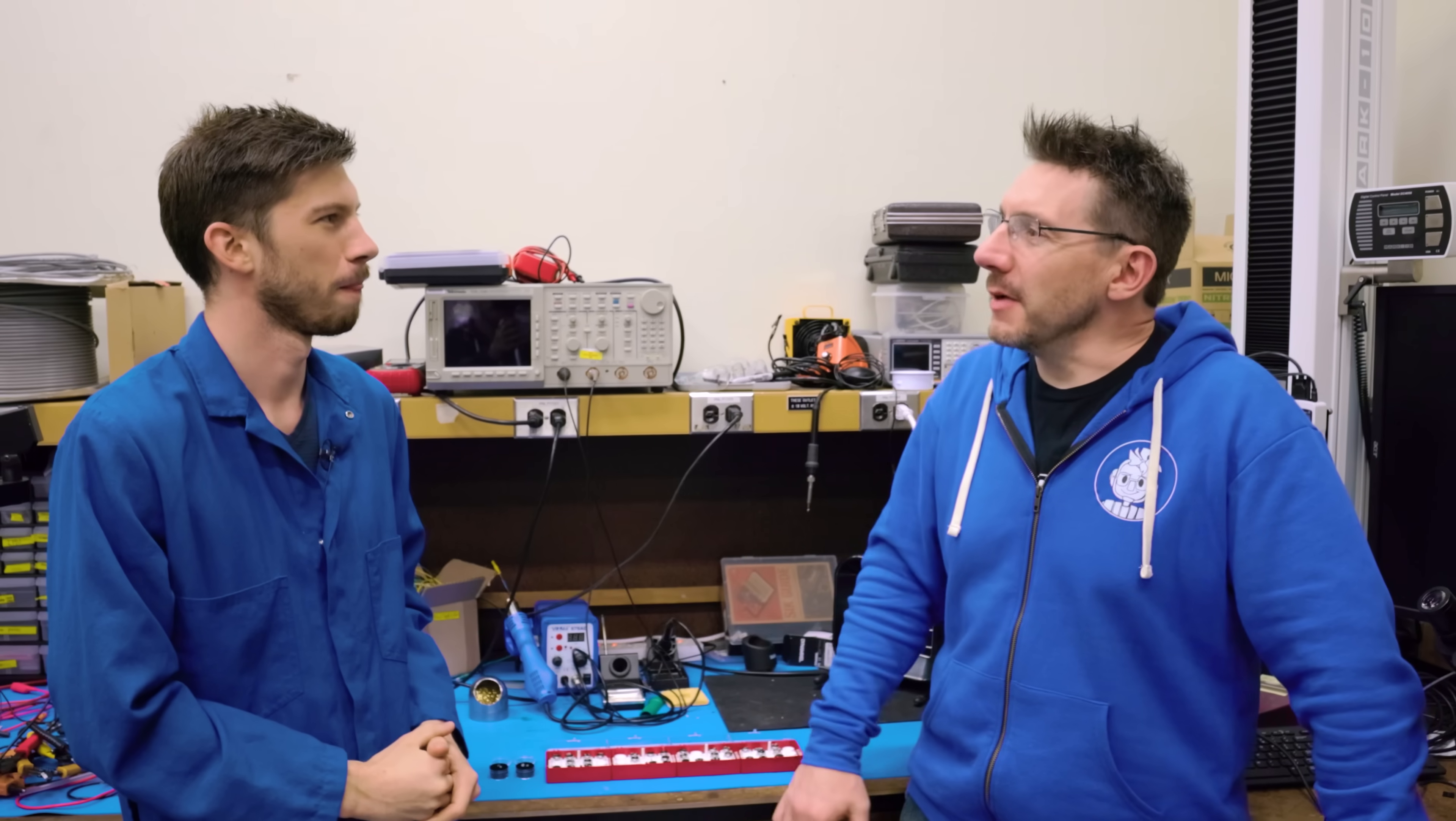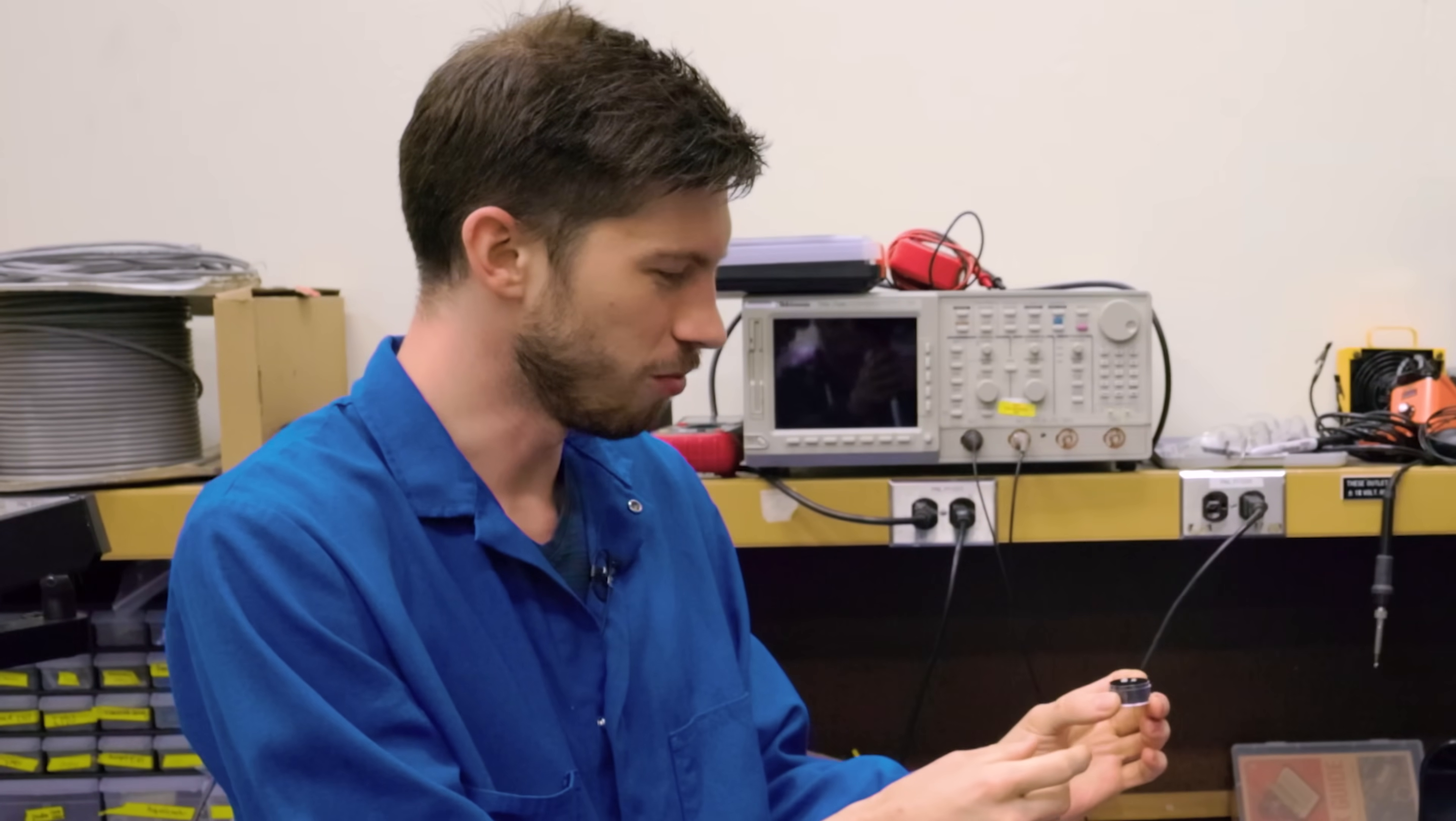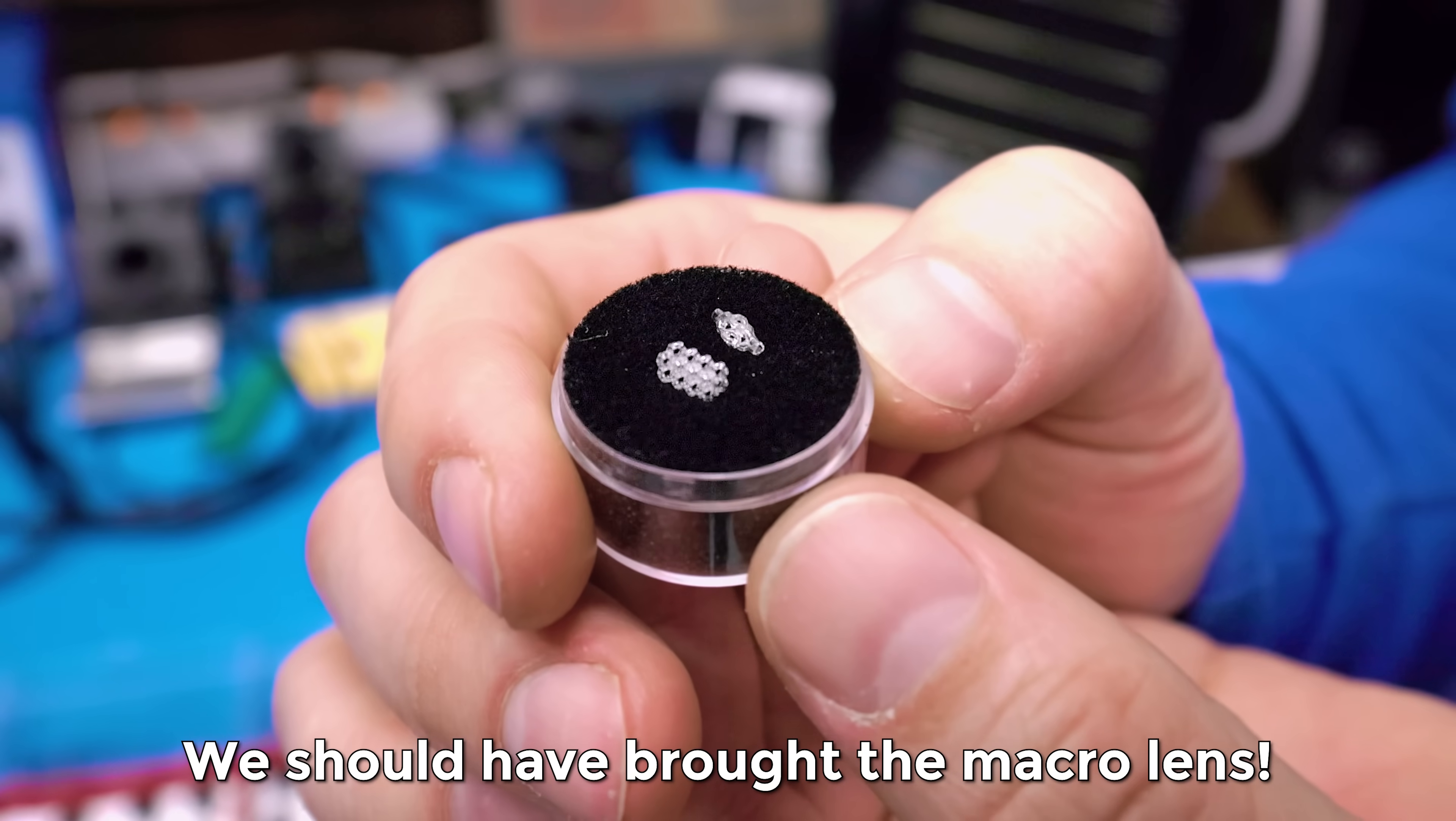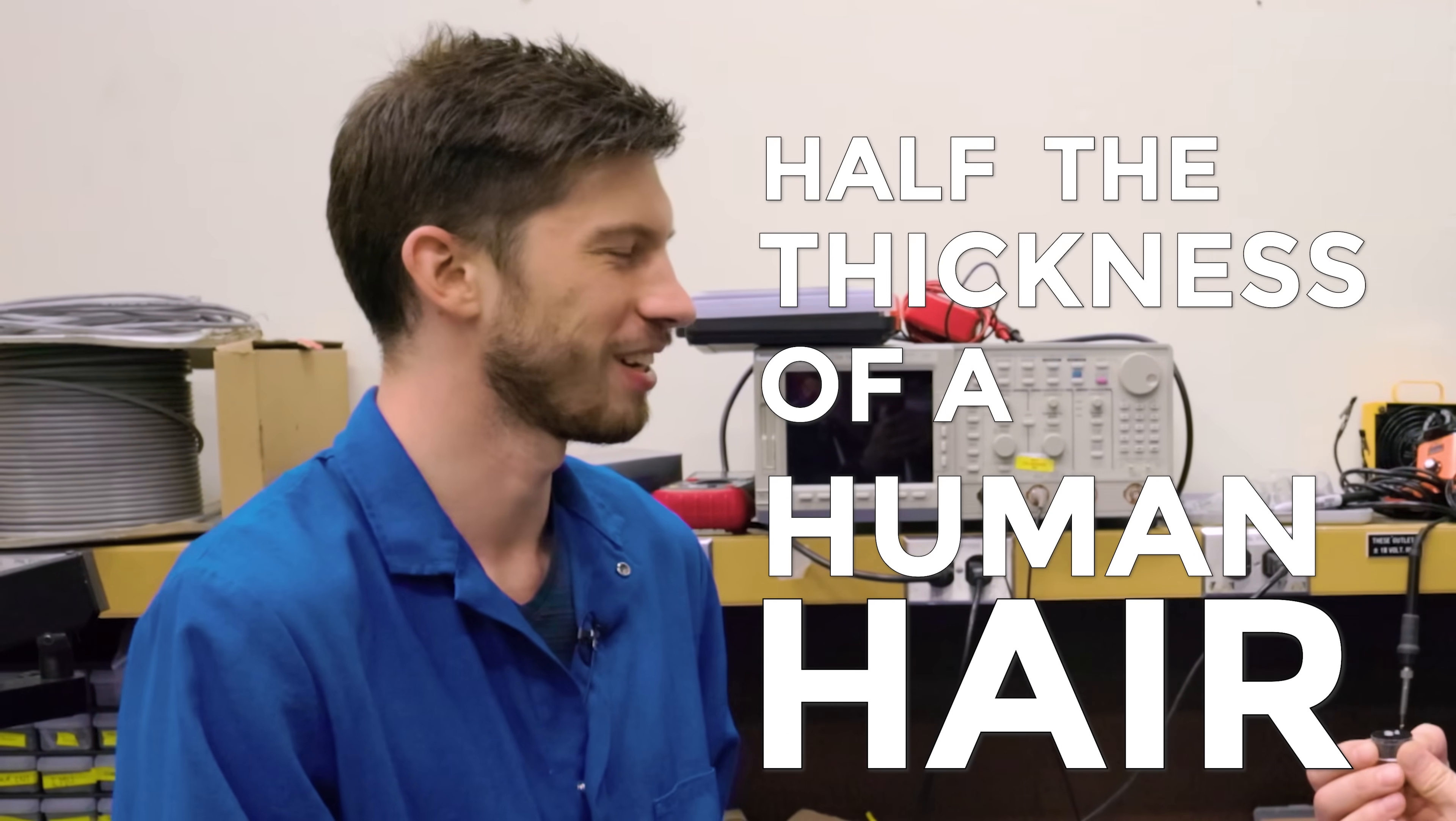And how big are these structures that you're making? Right now we've been able to print structures on the order of a few millimeters. Minimum feature sizes around 50 micrometers.